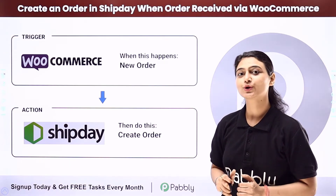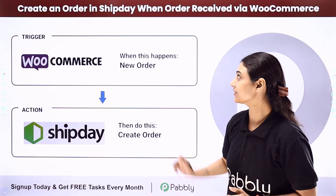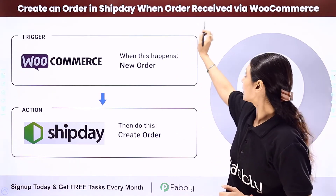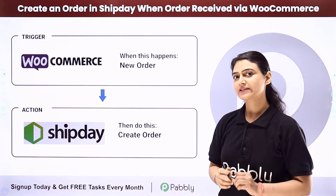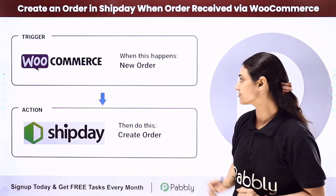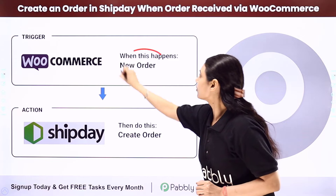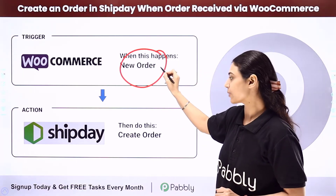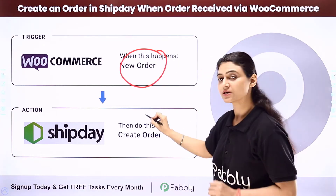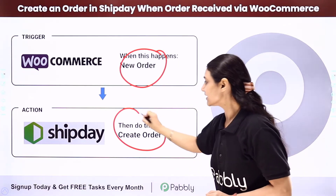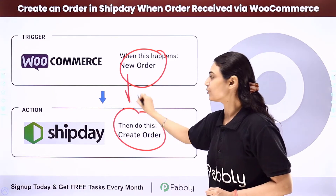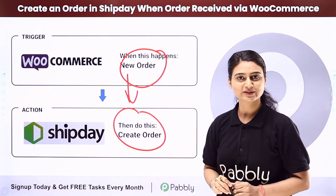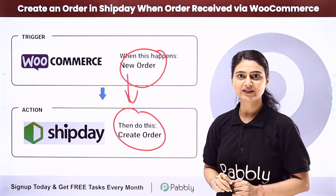In this video we will learn how you can automatically create an order in Ship Day when an order is received via WooCommerce. So every time an order is placed via WooCommerce, a new order should be created in Ship Day simultaneously. We are going to automate this entire process using Pabbly Connect.